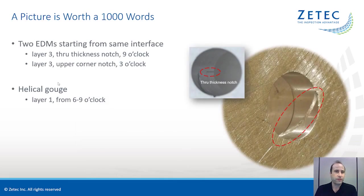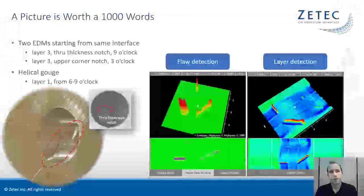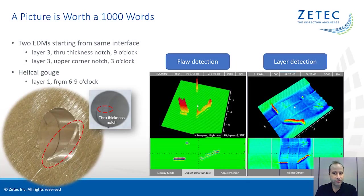Here's a picture of the hole in that previous example. There are two EDM notches in the third layer at nine o'clock and at three o'clock. There is a helical gouge in the top layer. Now imagine seeing squiggly lines appear and disappear in the impedance display. You can have an image which closely matches what you see here visually. They say a picture is worth a thousand words.